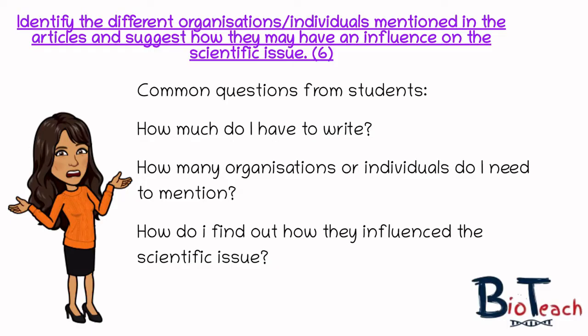In previous years students have got the full marks on this question by mentioning fewer than six individuals or organisations, because their answers about each person they mentioned were so fully explained and detailed in terms of how they influence the scientific issue that they met the marking criteria needed.